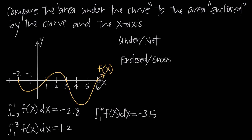The difference is that with area under the curve or net area, you treat area above the x-axis as positive and area below the x-axis as negative. That's what you do when you take an integral of a function — area above the x-axis is positive and area below the x-axis is negative. But sometimes you'll hear area enclosed by the curve, and that means gross area.